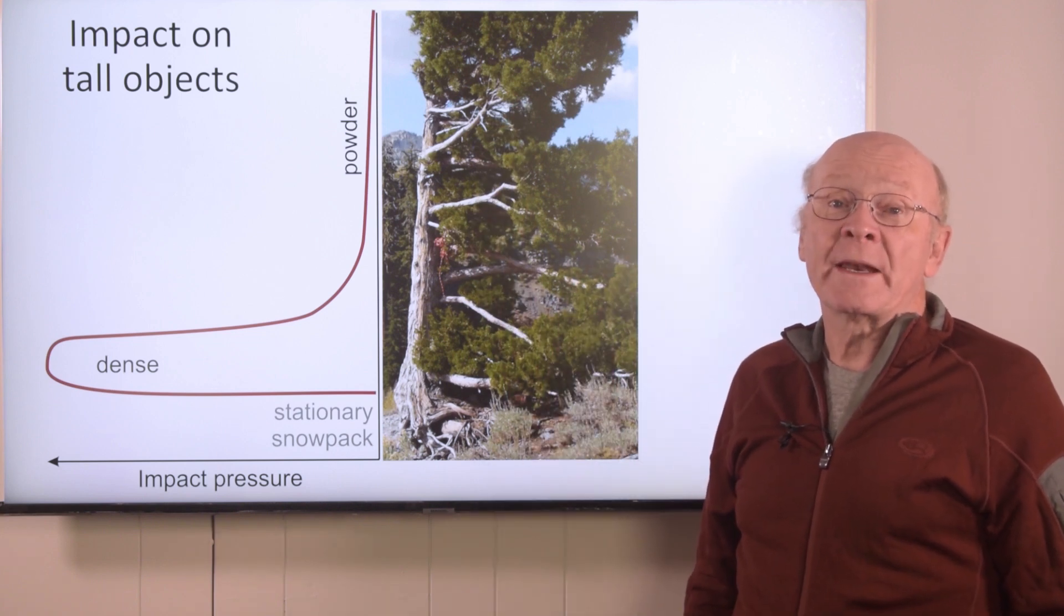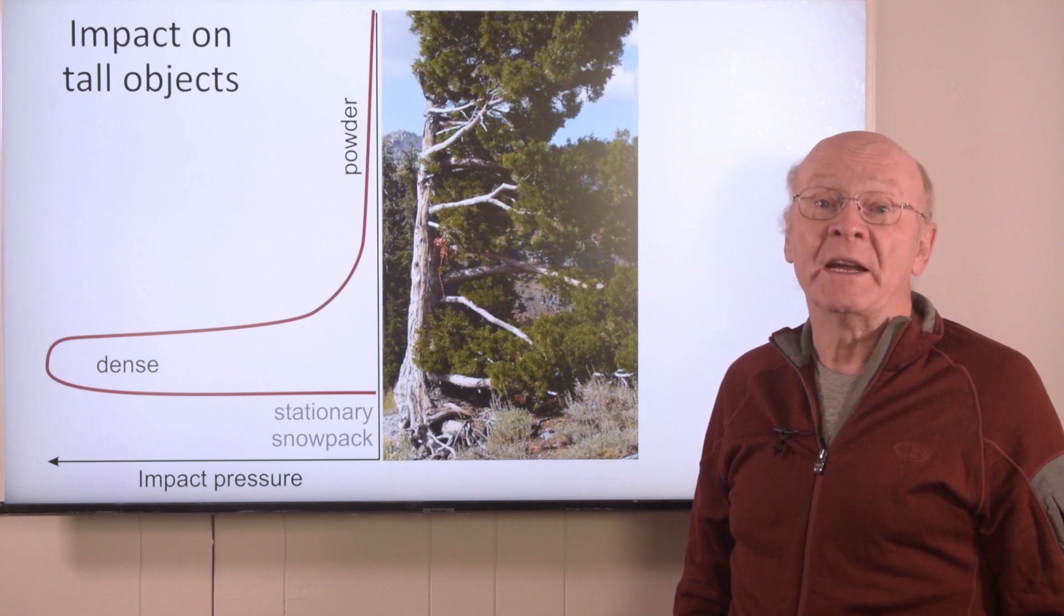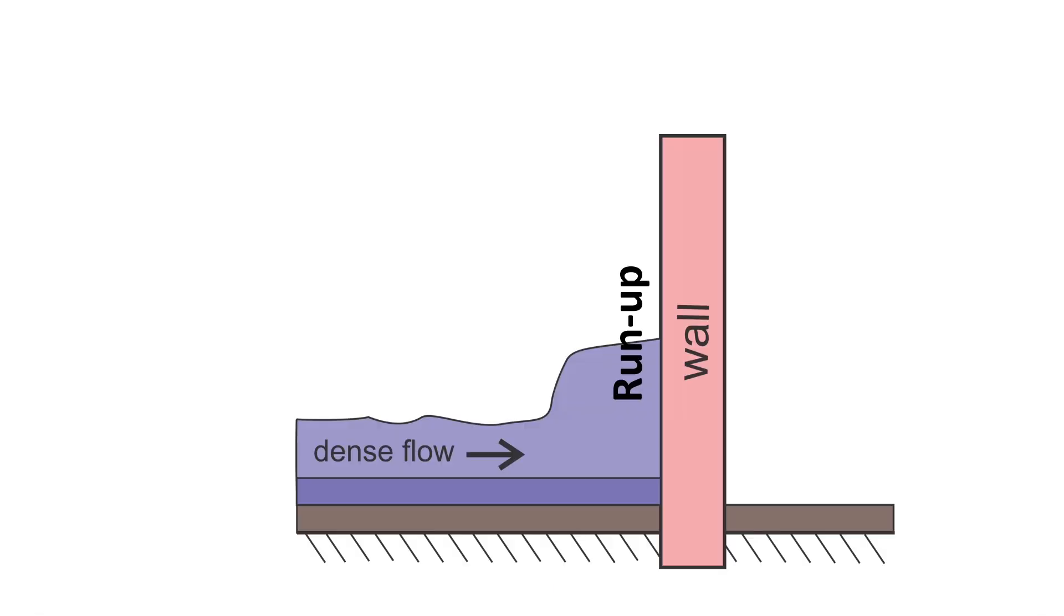When trees located past the deposit for the dense flow are damaged, we can be sure the powder layer did the damage. When analyzing the impact on tall objects, the run-up of the layers is considered. This includes walls like this one, which protects a highway. The run-up and impact calculations can be done for two, or as shown here, for three layers: the dense flow, the fluidized or saltation layer, and the powder layer.